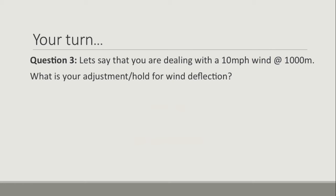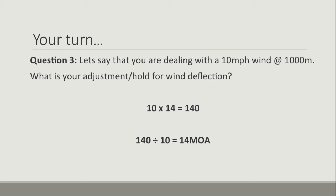Third and final — dealing with a 10 mile an hour wind at 1,000 meters. What is your adjustment or hold for wind deflection? Pause the video, run through the formula, then check your answer. Our 10 mile an hour wind multiplied by our constant for 1,000 meters — which is 14 — gives us 140. 140 divided by our wind value of 10, which always stays the same, gives us 14 minutes of angle.